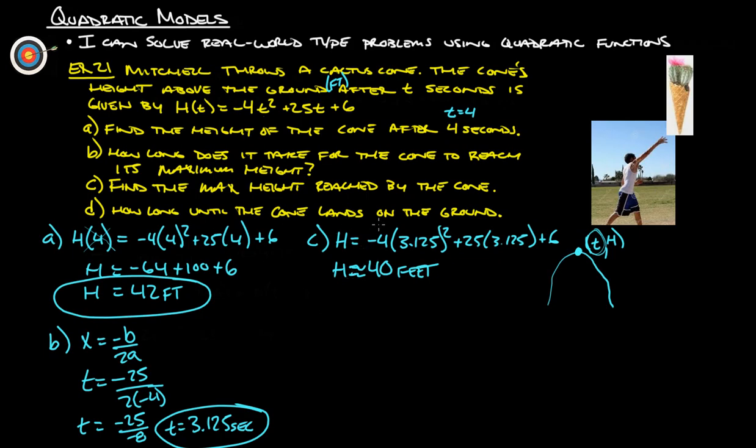And then part d, how long until the cone lands back on the ground? So basically, you can kind of look at this kind of somewhat as the path, and then we want to know when it gets back to the ground here, and that is along the x-axis, so that's when y equals 0. So we just plug a 0 in for our height, so we want to know when the height's going to be 0, right? So part d, 0 equals negative 4t squared plus 25t plus 6.